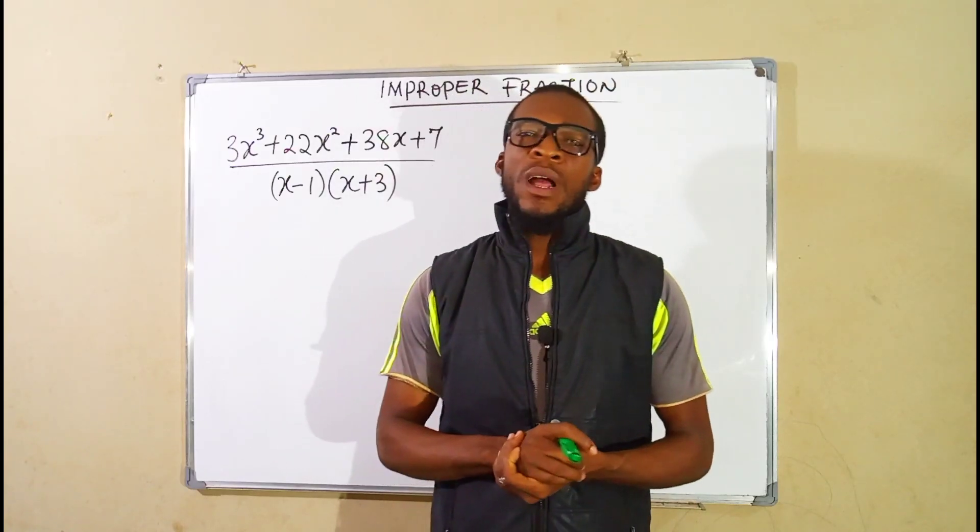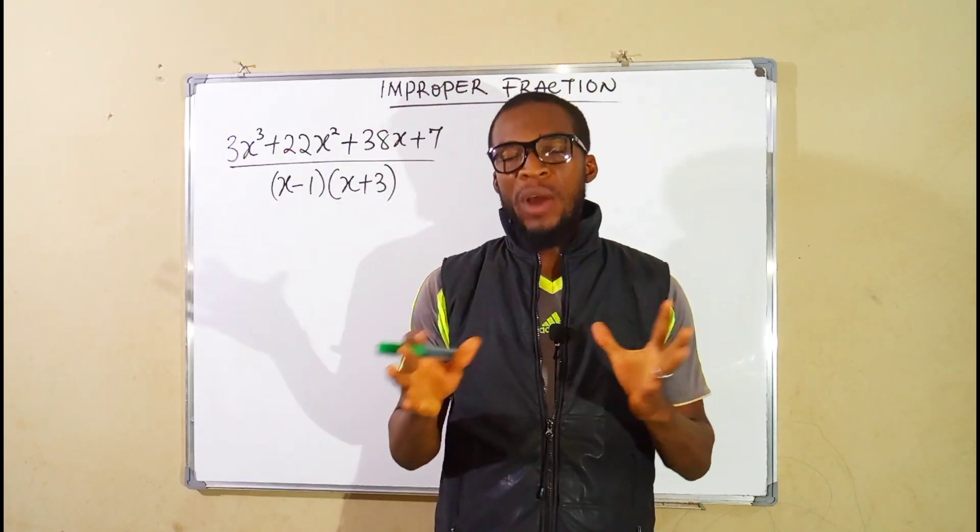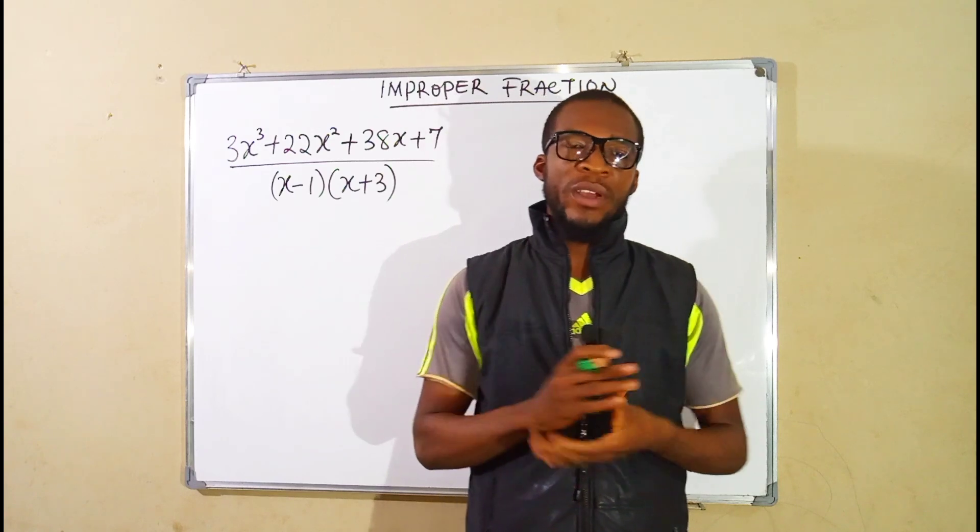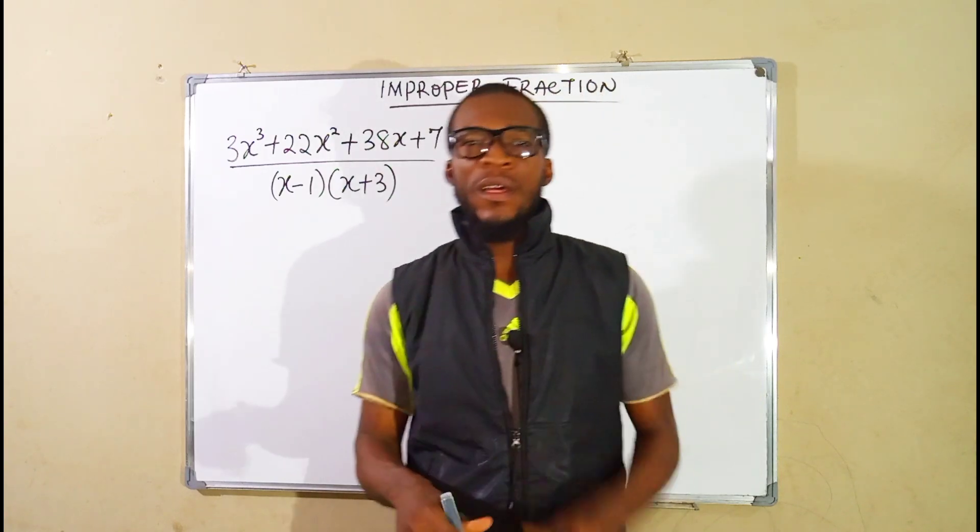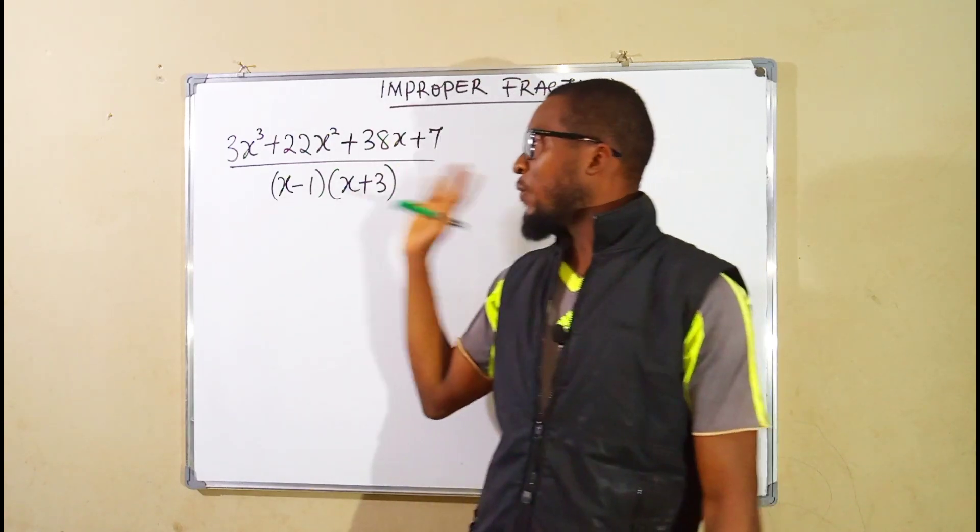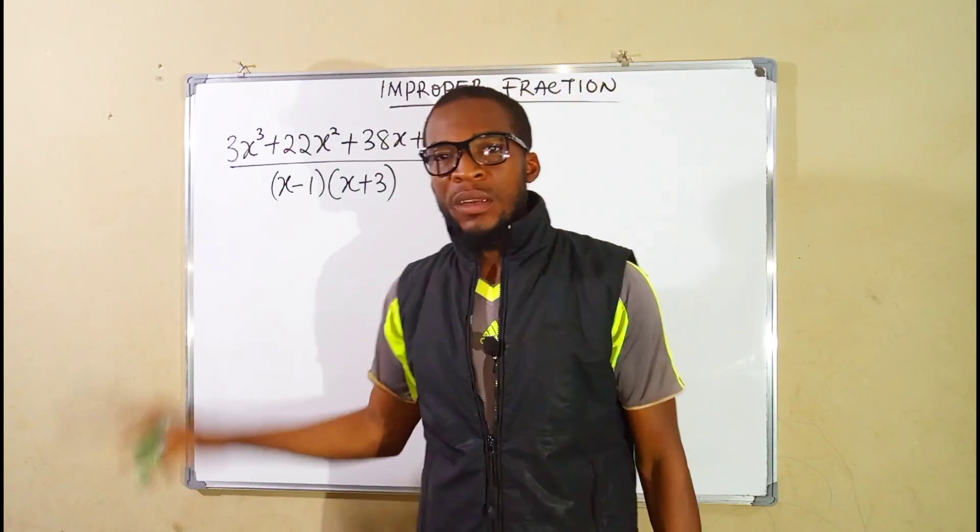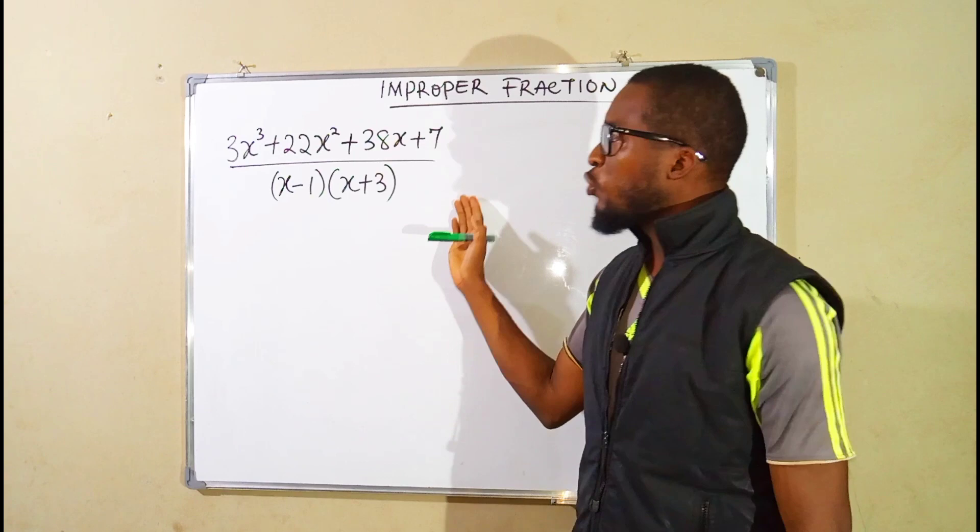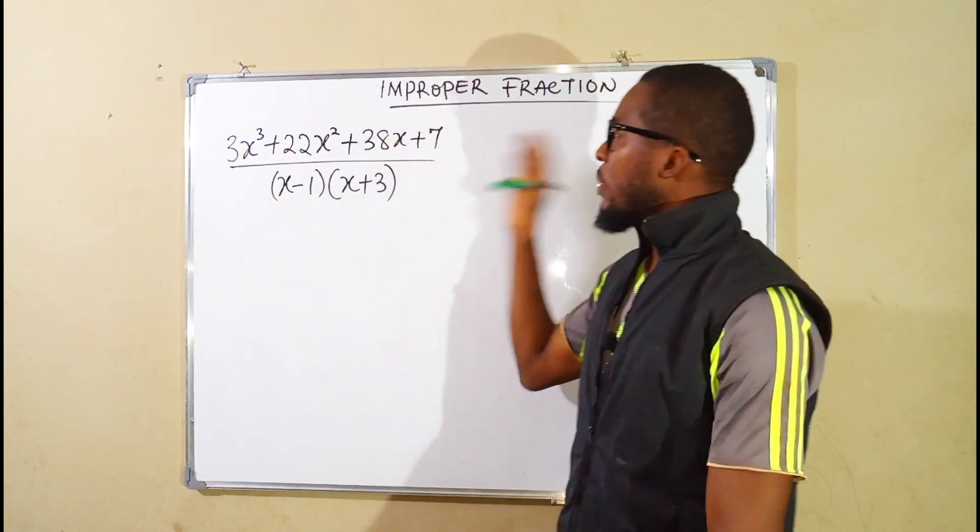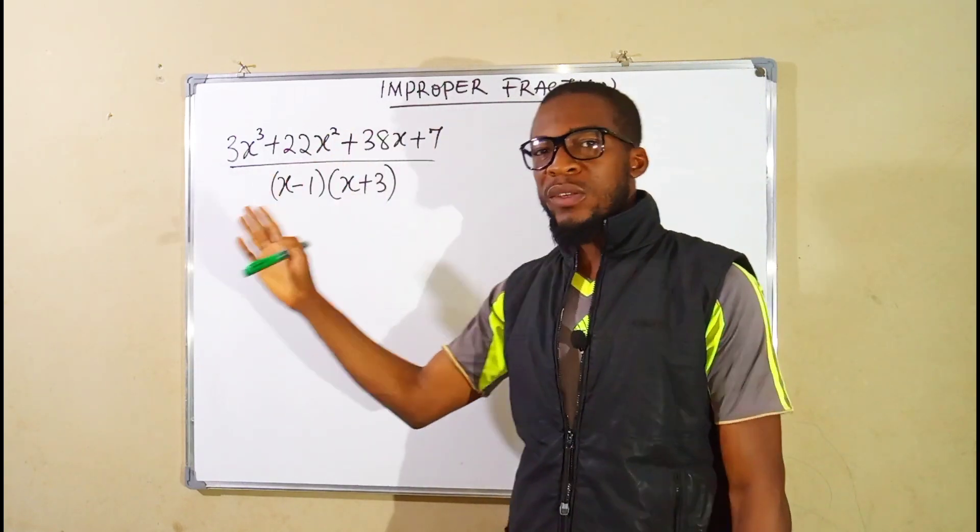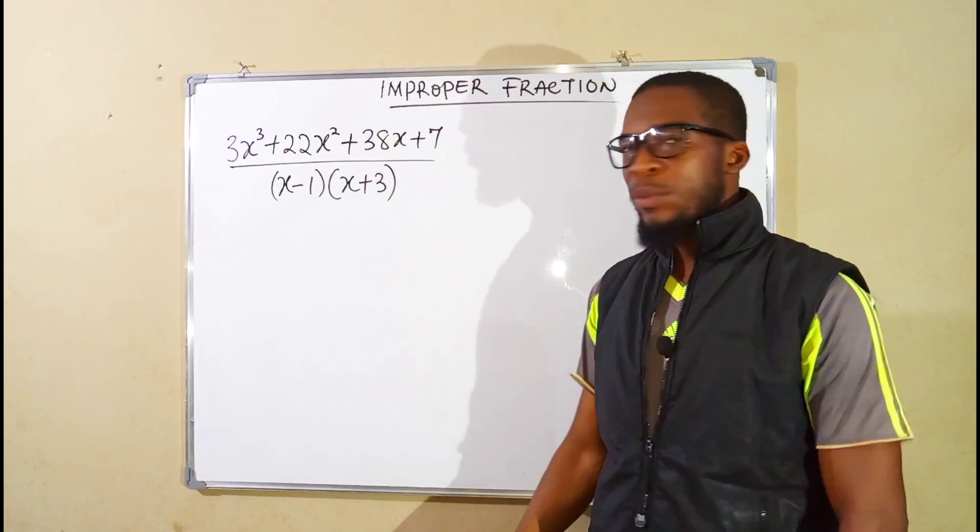Hello, good morning viewers. Still on to how to dissolve compound fractions into partial fractions. Today I have another improper compound fraction that I want to dissolve into partial fraction. This compound fraction is said to be improper because the degree of the numerator is higher than the degree of the denominator.